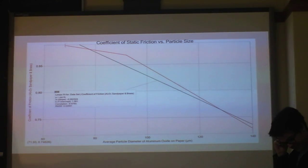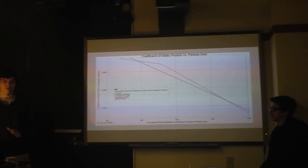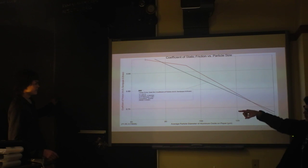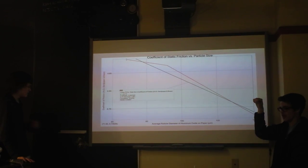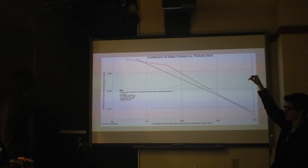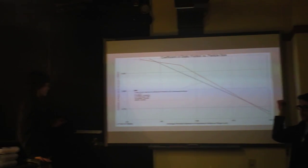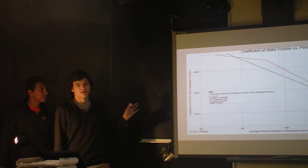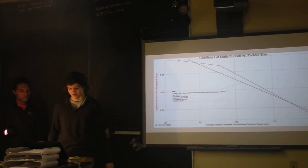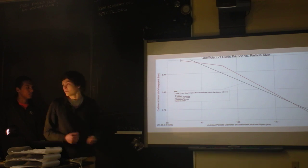This isn't raw data, this is something we calculated. We should have probably put a graph of the raw data on it. Basically our graphs of raw data were just large signals and then they would go down as it started to move, and then it would go back up when I stopped it and started applying a smaller force. Then it would reach peak again when it stopped. We would just take the maximum value of that. This is the point that we were looking at when we overcame static friction.